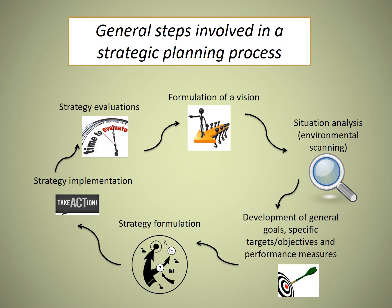There are six general steps involved in a strategic planning process: the formulation of a vision for the future; a situational analysis or environmental scanning; development of general goals; specific targets or objectives; specification of tactical action strategies or strategy formulation; strategy implementation through operational plans; and an evaluation component.